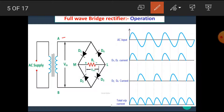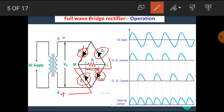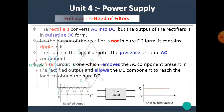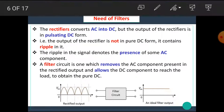But during the negative half cycle, point A becomes negative and point B becomes positive. Hence, only diode D2 and D4 are forward biased. At the same time, diode D1 and D3 are reverse biased. Hence, current flows from point B to D2, through load RL, to D4, and then to point A. That means during the negative half cycle, diode D2 and D4 conduct and output appears across the load. I hope you all remember the operation of these rectifiers.